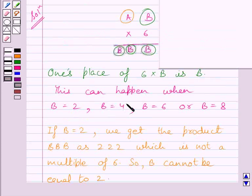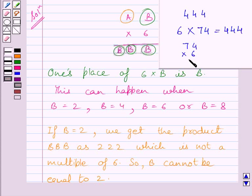Now when B is equal to 4, then we get the product BBB as 444. Now clearly you can see, 444 is divisible by 6, or we can say, 444 is a multiple of 6. Now, we can write this product as 74 multiplied by 6 gives 444.